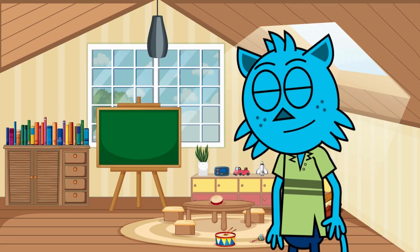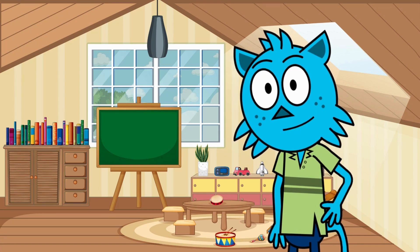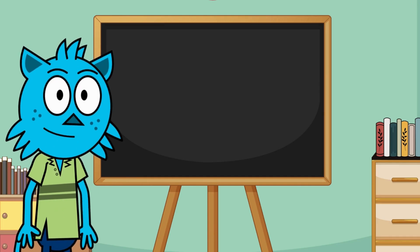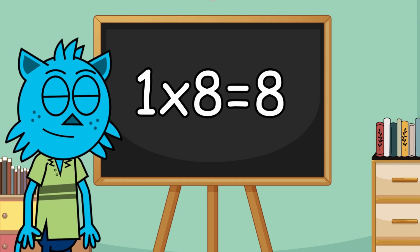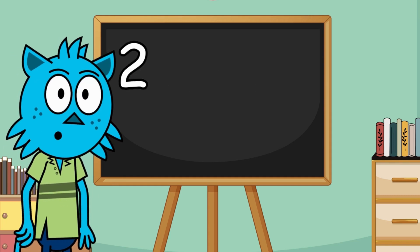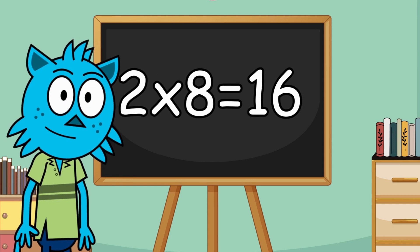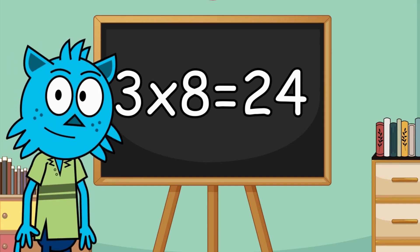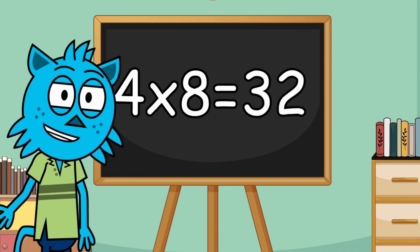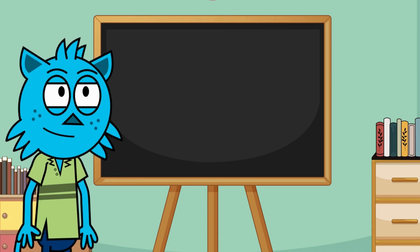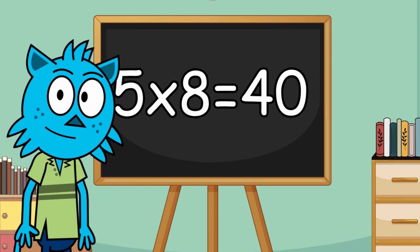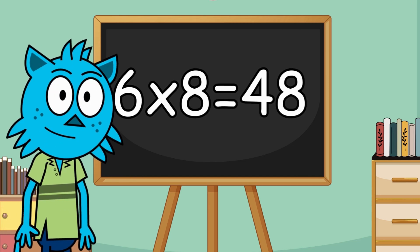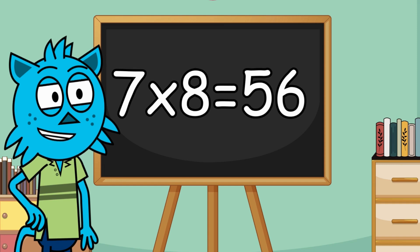You're doing fantastic! Let's go one more round with numbers. Ready? Repeat after me. One times eight is equal to eight. Two times eight is equal to sixteen. Three times eight is equal to twenty-four. Four times eight is equal to thirty-two. Five times eight is equal to forty. Six times eight is equal to forty-eight. Seven times eight is equal to fifty-six.